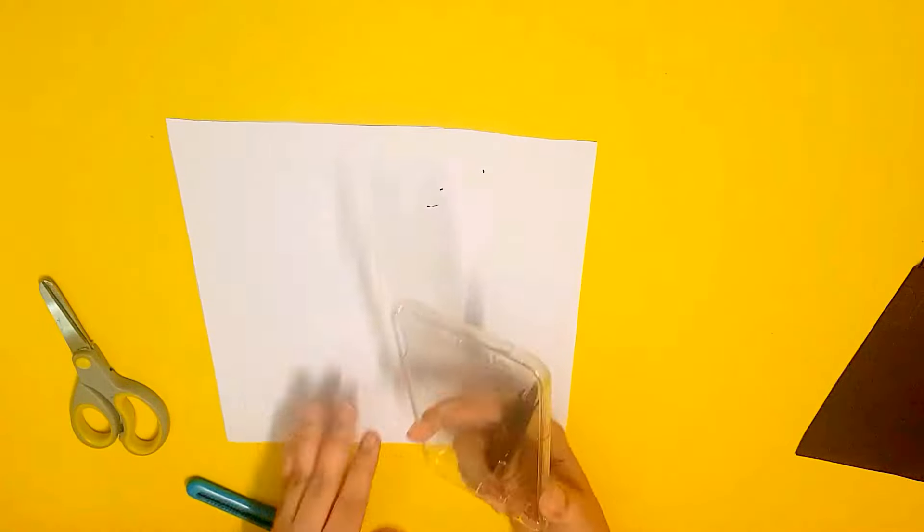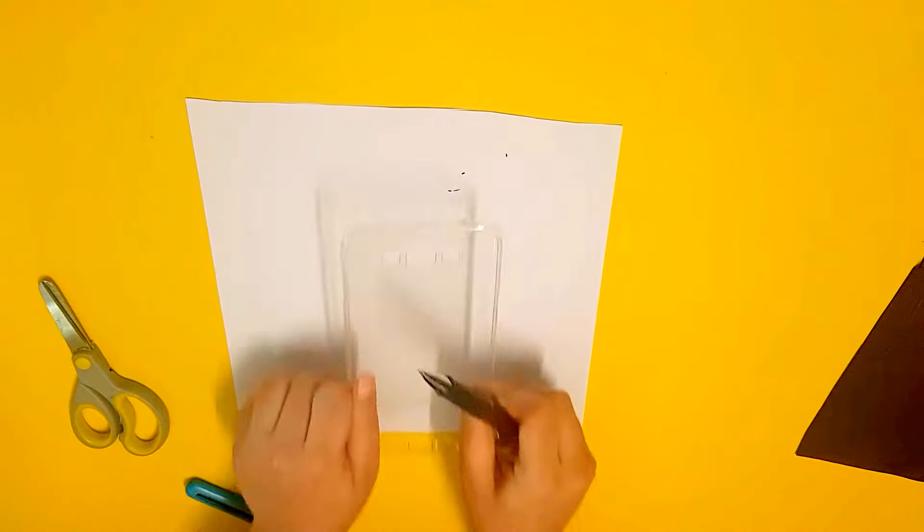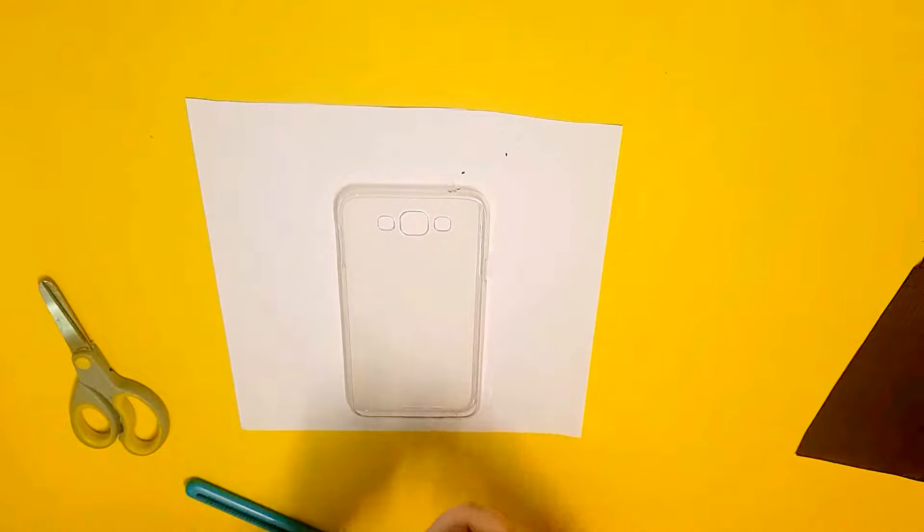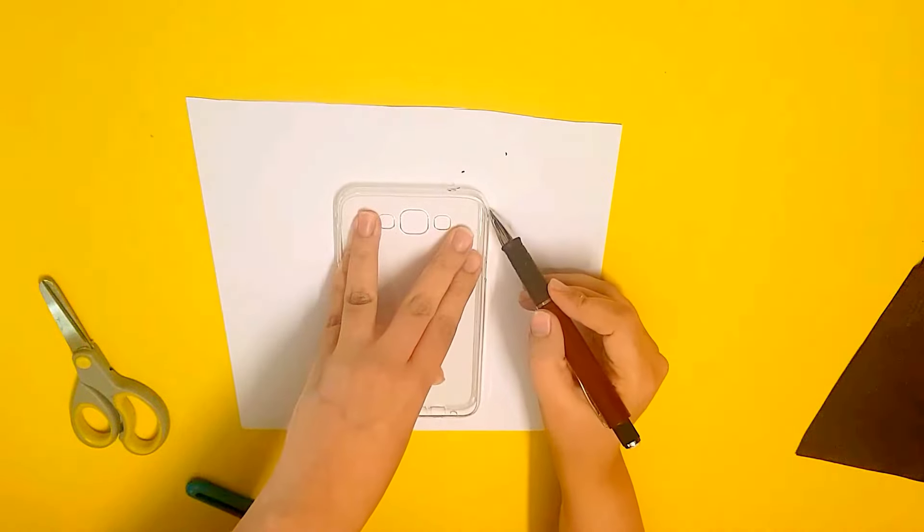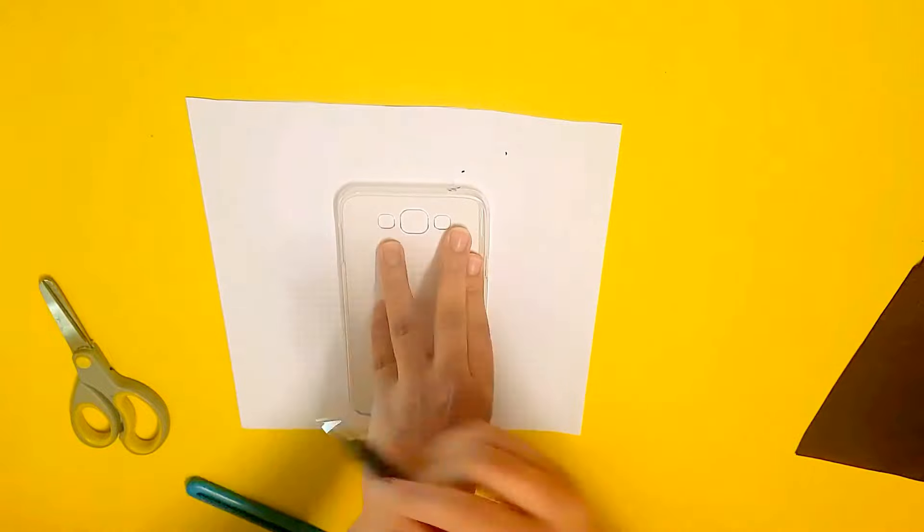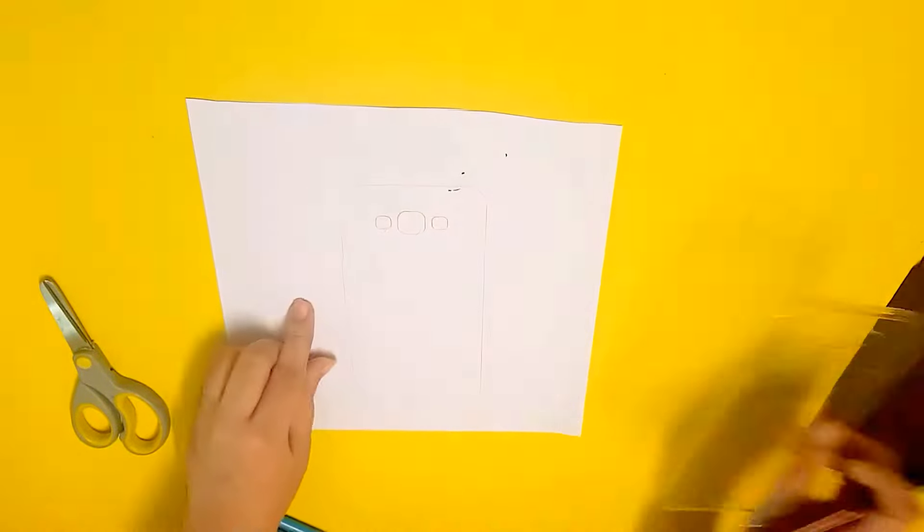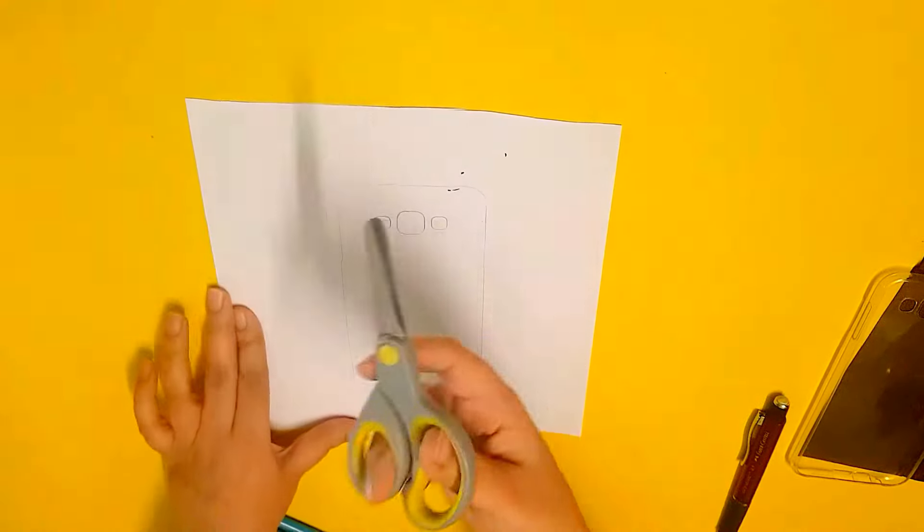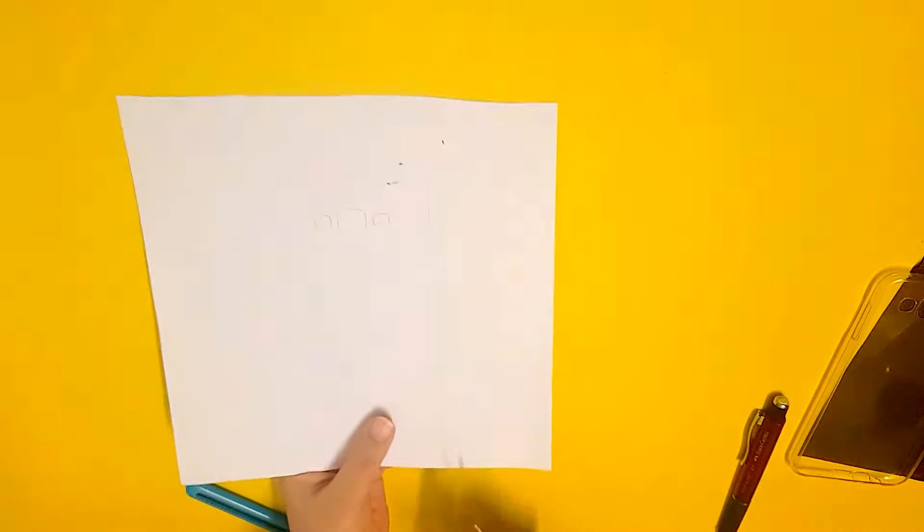First of all, what you need to do is you put your paper and you have to trace the outline of this cover. I'm just going to do that. Just try to keep it inside a little bit. Like so. And when you're done, just take your scissors and cut the outline.